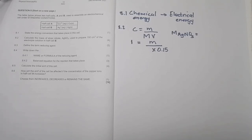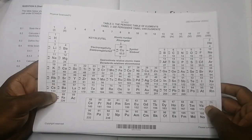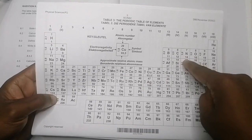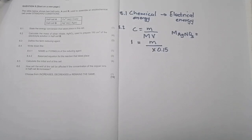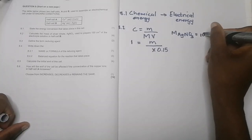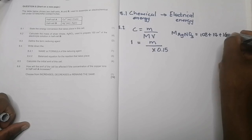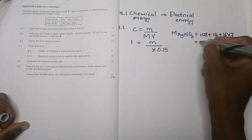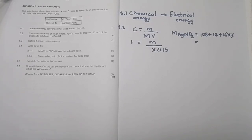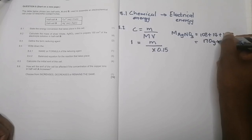Consulting the periodic table: silver is 108, nitrogen is 14, and oxygen is 16. For silver nitrate (AgNO₃), the molar mass is 108 + 14 + (16 × 3) = 108 + 14 + 48 = 170 grams per mole.